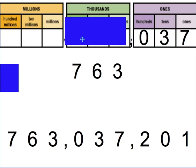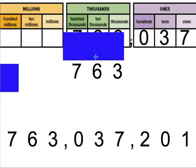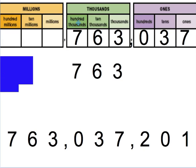Now we can deal with the ones. In 037, that's just a 37. There's no other comma, so we know that we just read this as 37.